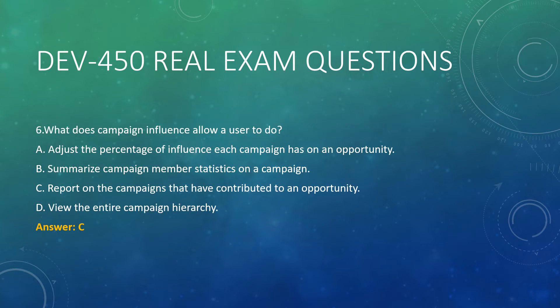Question 6. What does campaign influence allow a user to do? A. Adjust the percentage of influence each campaign has on an opportunity. B. Summarize campaign member statistics on a campaign. C. Report on the campaigns that have contributed to an opportunity. D. View the entire campaign hierarchy. Answer: C.